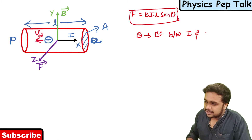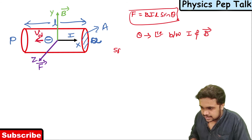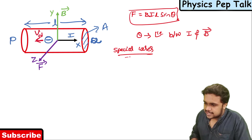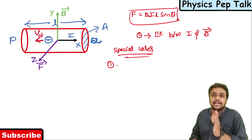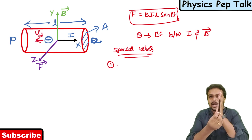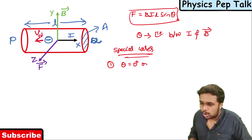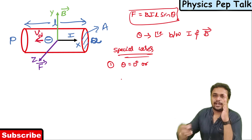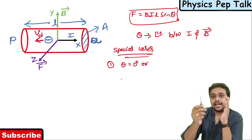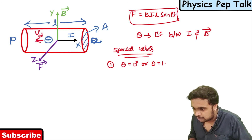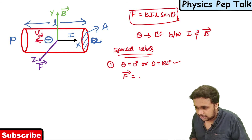Now I will prove two special cases. First case: if the direction of current and the direction of the magnetic field are the same, then theta equals zero degrees. If they are opposite, theta equals 180 degrees. In both these cases, sine of theta is zero, so the force experienced by the conductor placed in the magnetic field will be equal to zero.